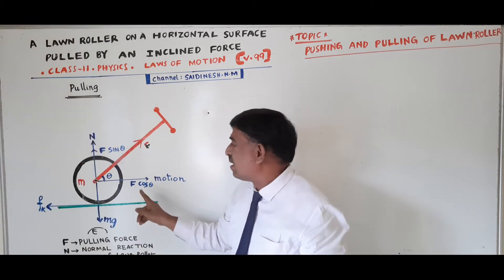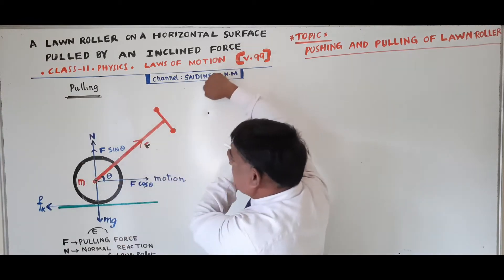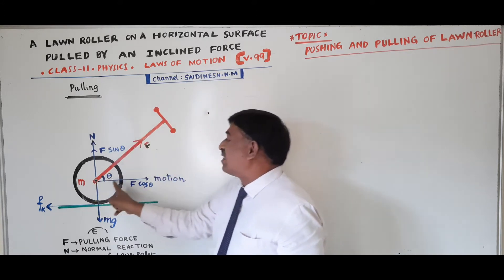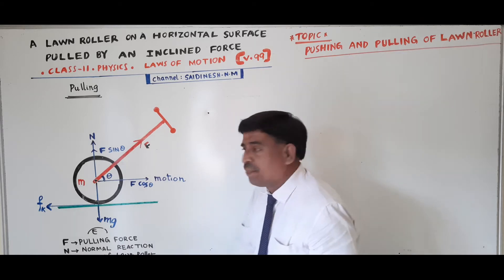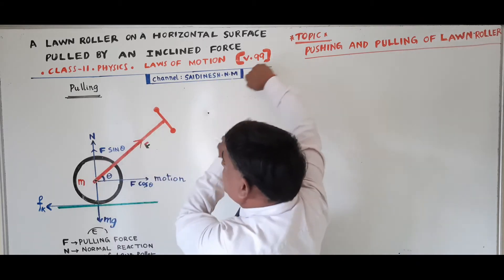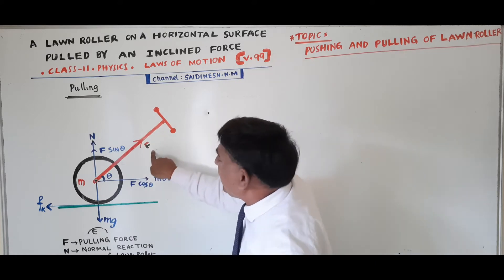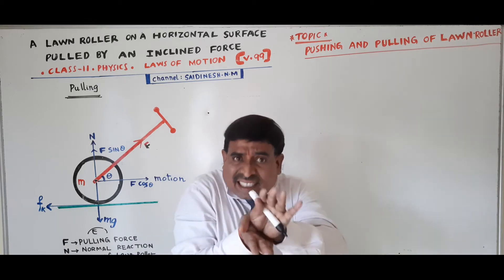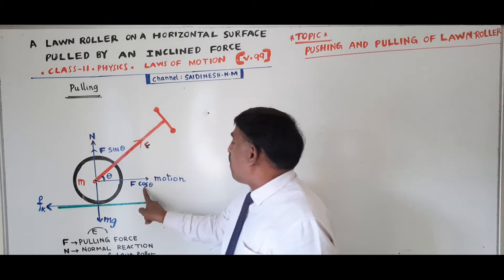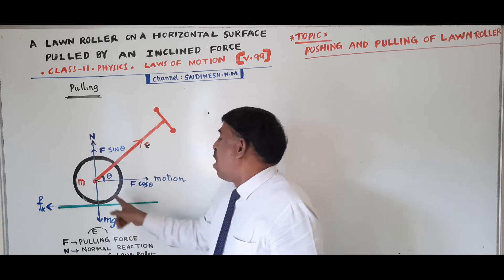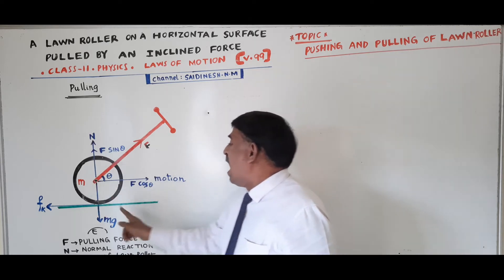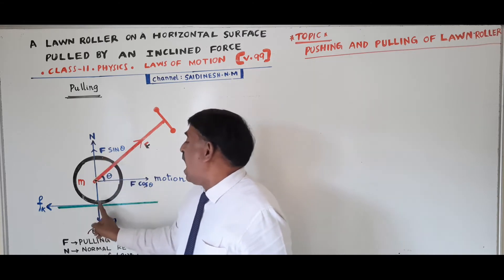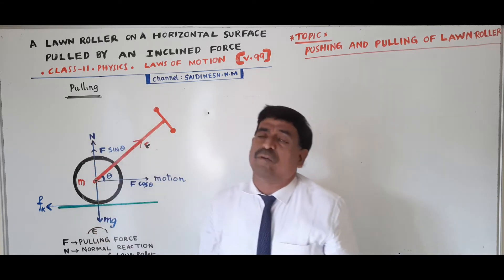Now consider a rough horizontal surface. The applied force on the land roller makes an angle theta with the horizontal direction — this is the pulling force. The pulling force F is resolved into two perpendicular components: F cos theta along the horizontal direction, and F sin theta along the vertically upward direction.